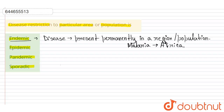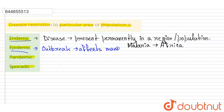The next option is epidemic. An epidemic is an outbreak that affects many people at one time and can spread through one or several communities. An example of an epidemic would be cholera or diarrheal diseases.